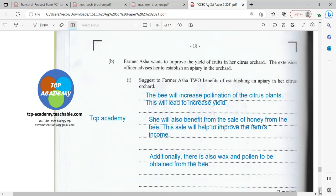Farmer Asha wants to improve the yield of fruits in her citrus orchard. The extension officer advised her to establish an apiary in the orchard. Suggest to Farmer Asha benefits of establishing an apiary in her citrus orchard. The benefits are many. One: the bee being close to the orchard will increase pollination. If pollination is increased, then naturally we're going to have increased yield, more oranges being produced at the plant.